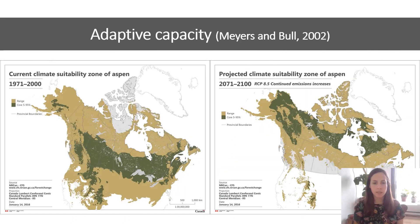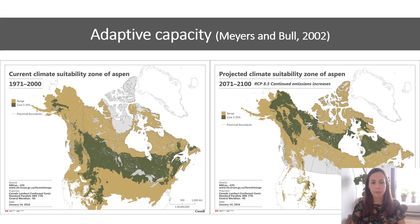Due to climate change, climate zones are predicted to shift northwards by hundreds of kilometers by the end of the century, as can be seen here for aspen. On the picture on the left we see the current climate suitability zone, while on the right we see the optimal climate zone has shifted northwards by hundreds of kilometers by the end of the century. Species can deal with these changes by either using phenotypic plasticity, adapting, migrating, or they face the probability of extinction.